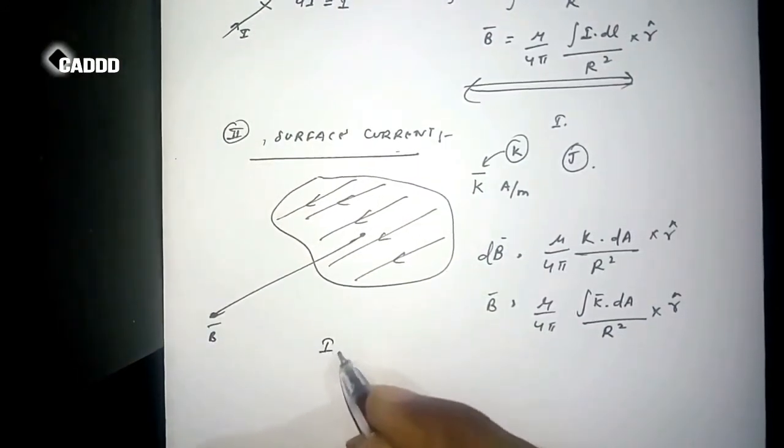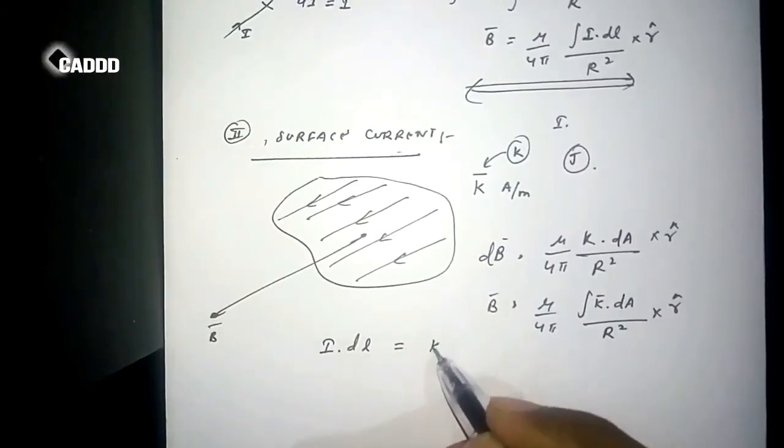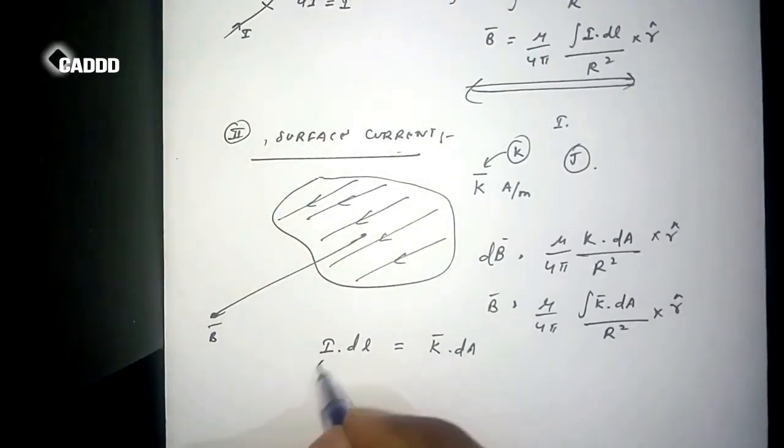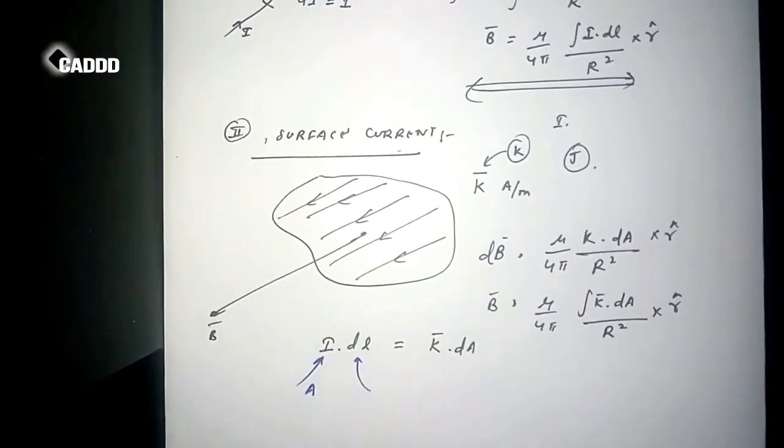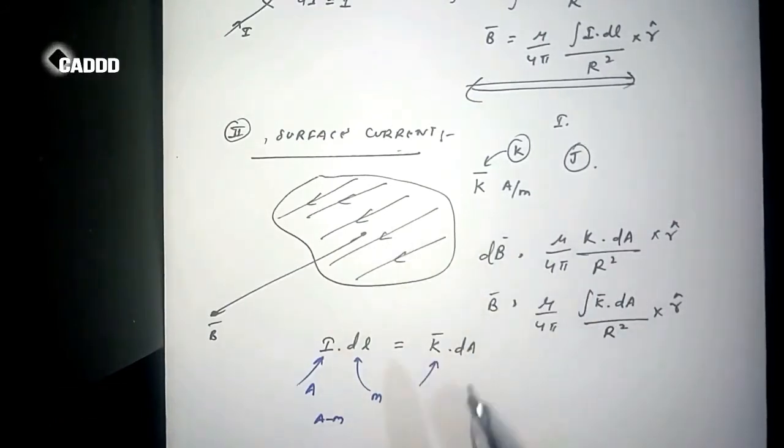One thing you must notice is I dot dL is same as K dot dA. The unit of I is ampere, unit of this thing is meter, so this thing became ampere meter. Here also the unit of sheet current is ampere per meter, and unit of area is meter square, so this is again becoming ampere meter.